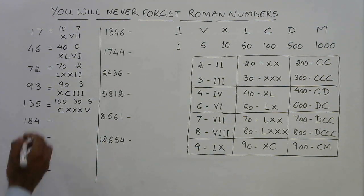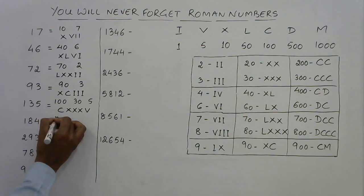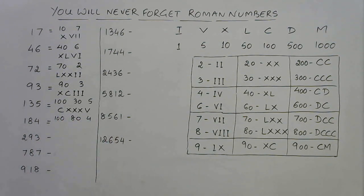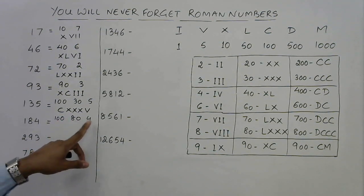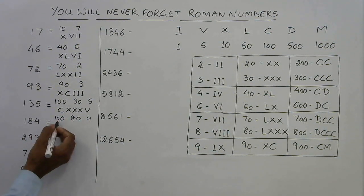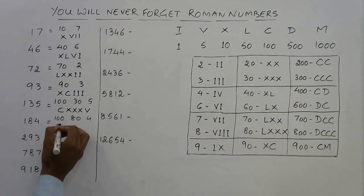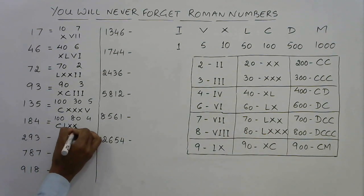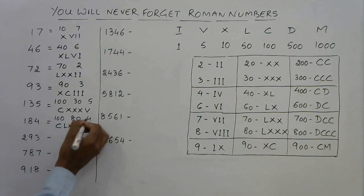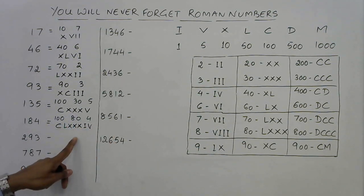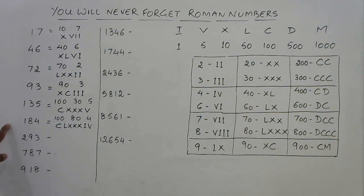For 184: break it into hundreds, tens, and ones. 100 is C, 80 is LXXX, and 4 is IV, so 184 is CLXXXIV.